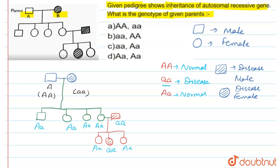Our answer is about parent A and parent B. The A parent genotype — what is genotype? Genotype is the genetic composition. So A parent genotype is capital A capital A. And what about B parent genotype? B parent genotype is small a small a. That's why the right answer is option one.